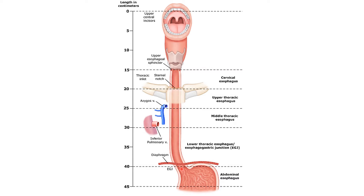The cardiac orifice is 40 cm from the upper incisor teeth. Once it enters the stomach at the cardiac orifice, that will be at the level of T11 — just one vertebra between the diaphragm and entering the stomach. The whole length here inside the peritoneum is retroperitoneal, except it will be covered by peritoneum anteriorly and laterally.